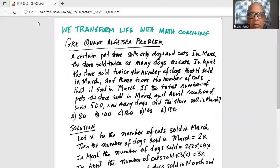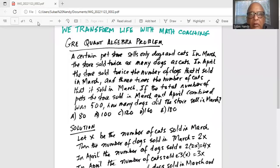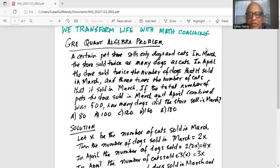A certain pet store sells only dogs and cats. In March the store sold twice as many dogs as cats.